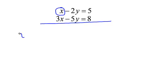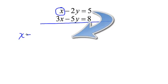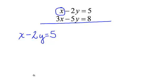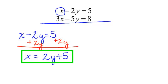So I'm going to write down my first equation, x minus 2y equals 5. How do we solve for x? Yes, we will add 2y to both sides, so x will equal 2y plus 5. I have completed my first step.